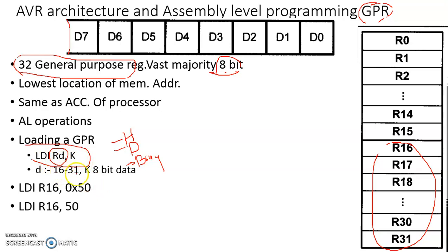LDI Rd, K is the format where D varies from 16 to 31. K is 8-bit data that can be directly loaded to the register. For example, LDI R16, 0x50 - 50 in hexadecimal, 8-bit data loaded into R16 register. To load hexadecimal data to an AVR register, label the data using a dollar sign or 0x.